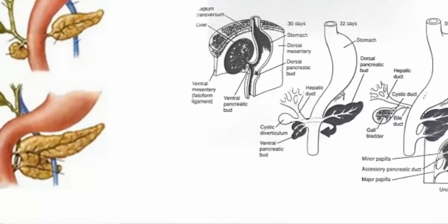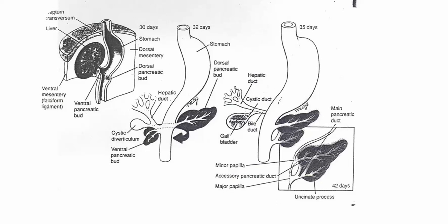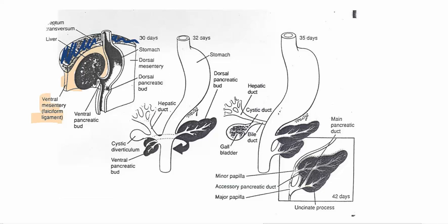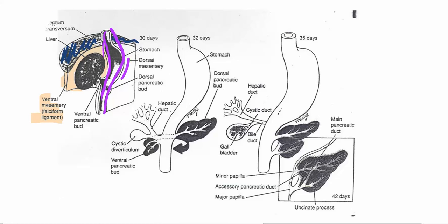Here is our septum transversum, and right here is our ventral mesentery. The ventral mesentery is going to become our falciform ligament later on. From this gut tube — notice that the stomach is also forming from the gut tube — we're having these cells migrating into the ventral mesentery, and we're going to have some of the mesodermal cells from the septum transversum coming in. That's how we're forming the liver.